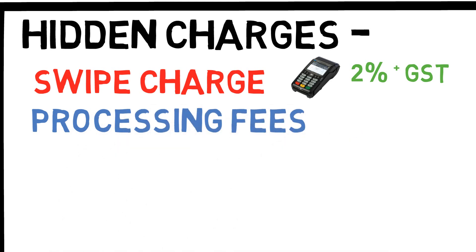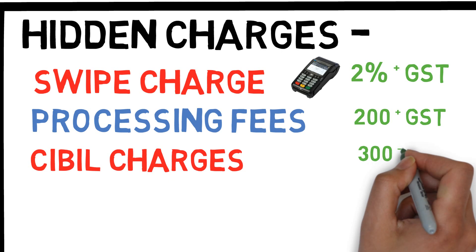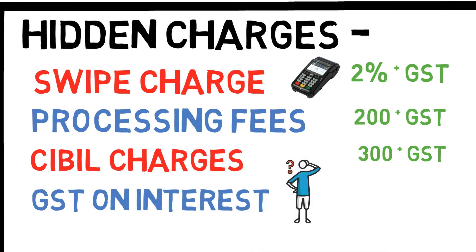Processing fees: a processing fee is levied by the bank to process the loan. It would vary depending on the lender, product, and price of the product, and so on. Generally it's around 200 rupees plus GST. Civil charges: some lenders also charge a fee under the name of civil charge — it's around 300 plus GST. GST on interest: wait, GST on interest? But we are not paying any interest — it's a zero cost EMI loan. Well, as I explained earlier, for a 60,000 product the loan is processed for 57,450, and the interest of 2,550 would be charged on that loan, which is generally given as a discount. And 18% GST would be levied on the interest, so around 460 rupees GST would be charged.